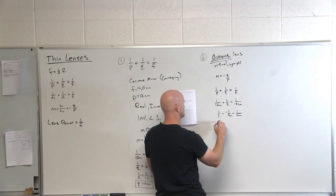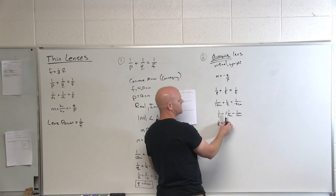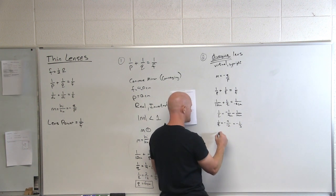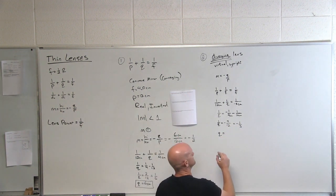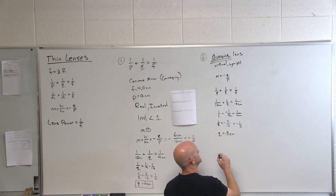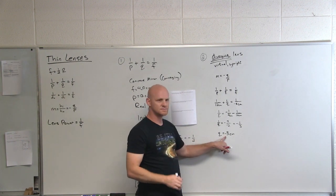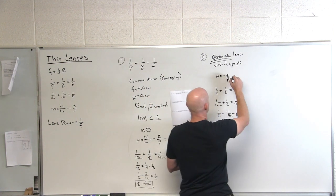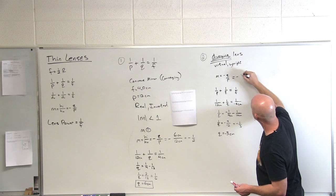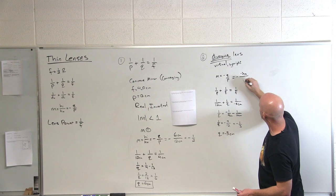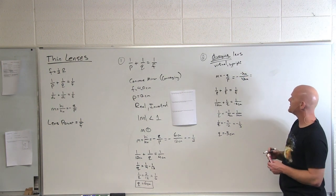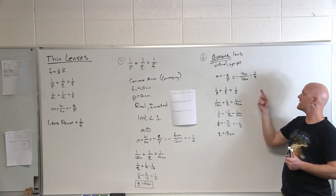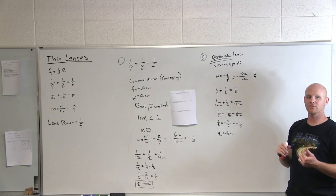So: 1/Q = negative 1/4 minus 1/12. Common denominator is 12. Negative 3/12 minus 1/12 is negative 4/12, which is negative 1/3. So Q equals negative 3 centimeters. The fact that Q is negative means it's a virtual image. Plugging into the magnification formula: negative of (negative 3) over 12 gives magnification equals one fourth. Positive means it's upright, and it's only one fourth the size of the original object.